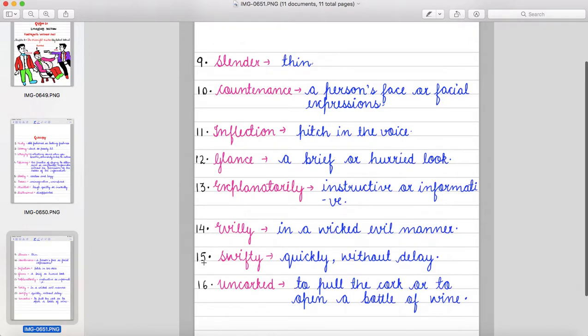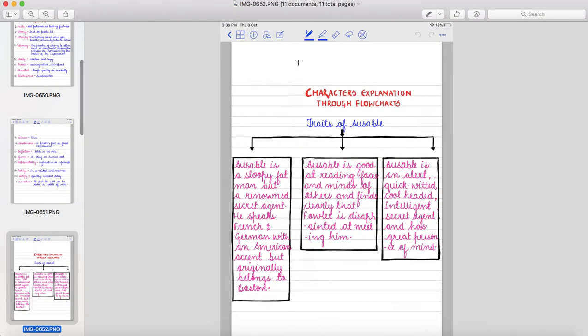Then swiftly, that means quickly without delay. And last, uncorked, to pull the cork or to open a bottle of wine. Right? Now students, we will discuss the characters through flowcharts.